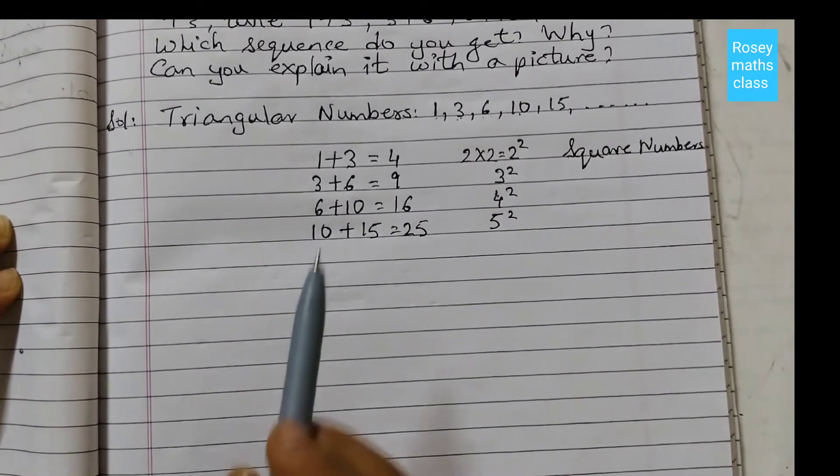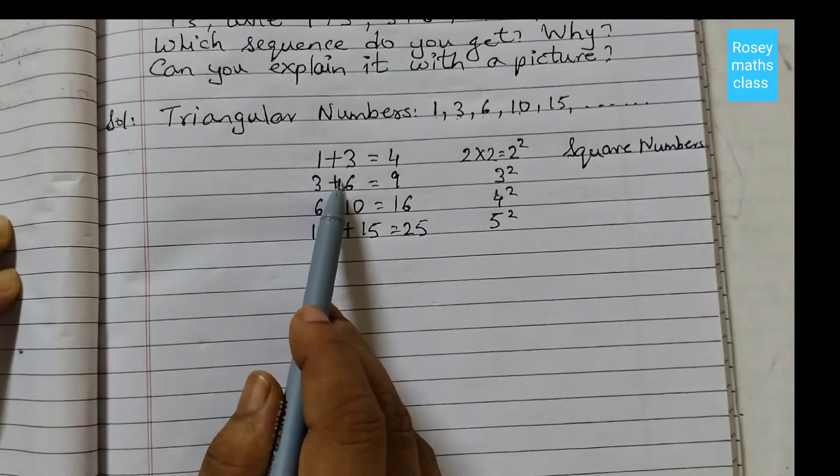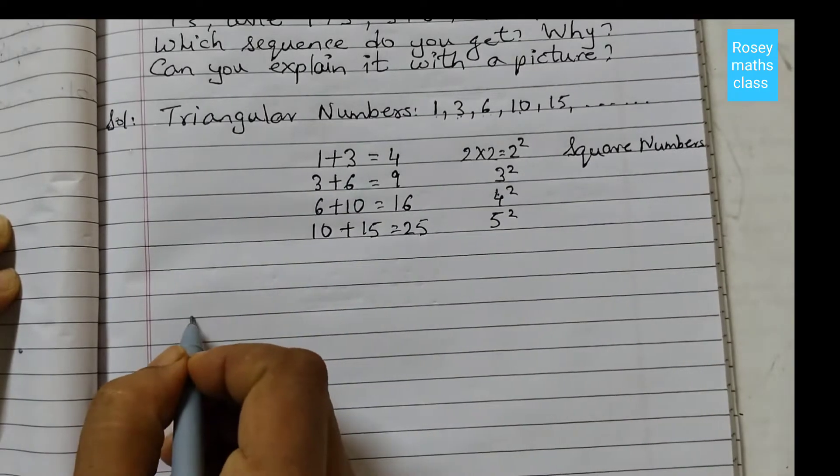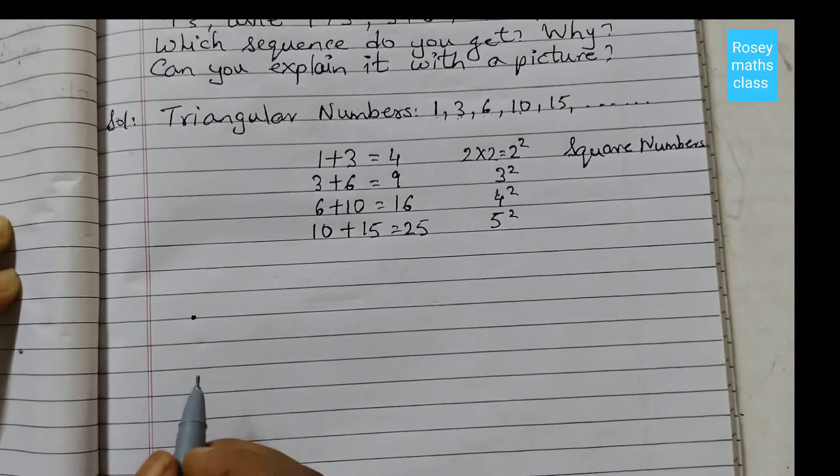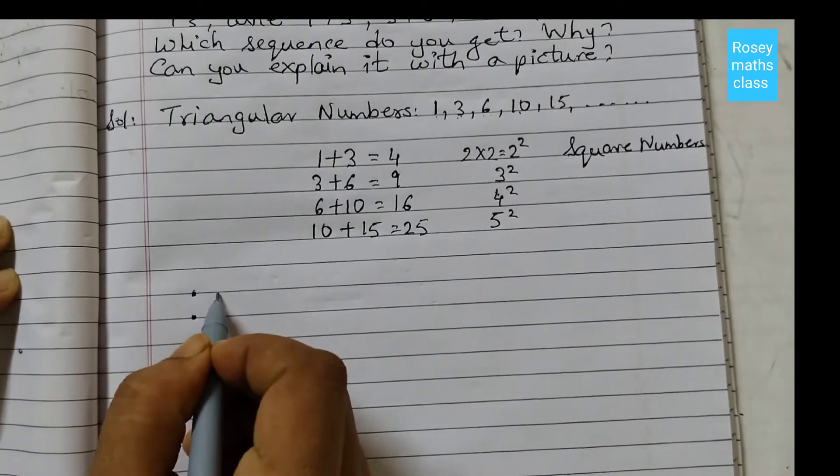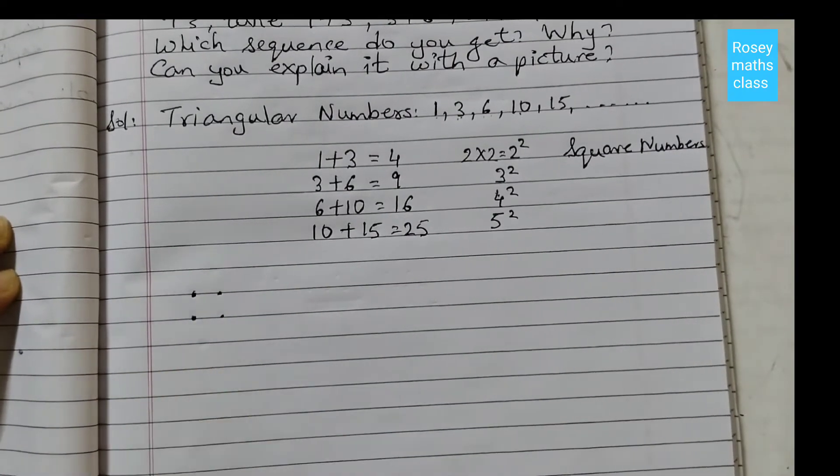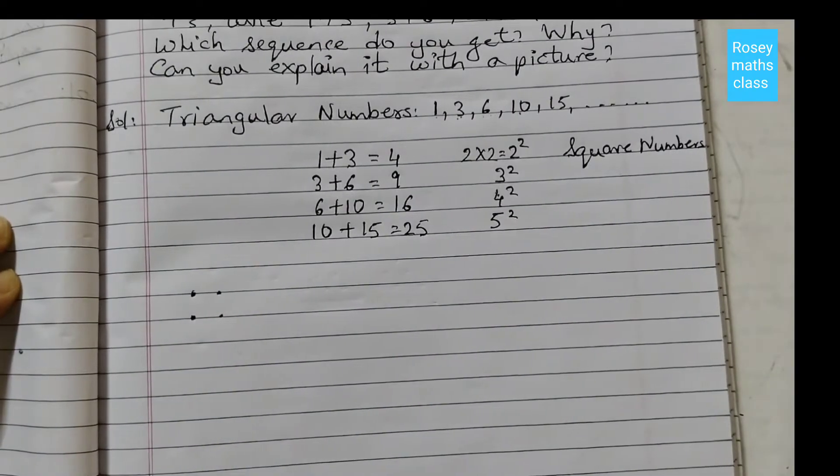First we will take 1+3. So draw one dot like this, and then 3 dots, so 1, 2, 3. Now see, a square is formed and this is a triangle. If you join this, this is a triangle.